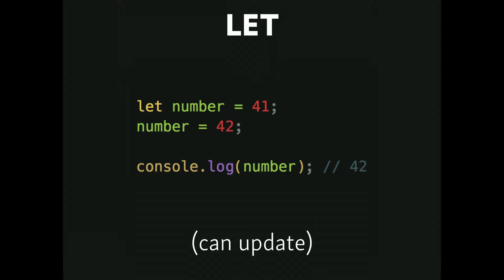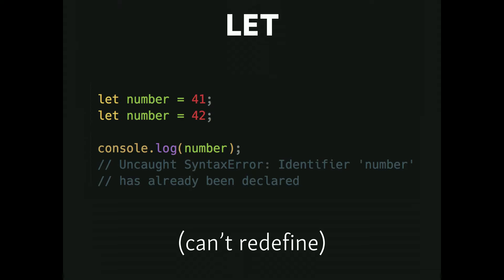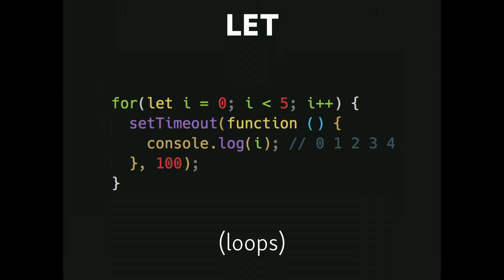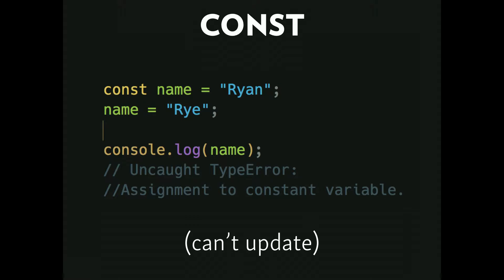The answer to var's problems is let. Let is like var in that you can update it — 41 to 42, you'll get 42 — but you can't redefine it. If you say let number equals 41 and then let number equals 42, you'll get an error saying the variable has already been declared. This is great for loops. With var in a for loop counting to five using setTimeout, the loop has already run by the time setTimeout fires, so you get 5 logged five times. But because let is block scoped, you get what you expect.